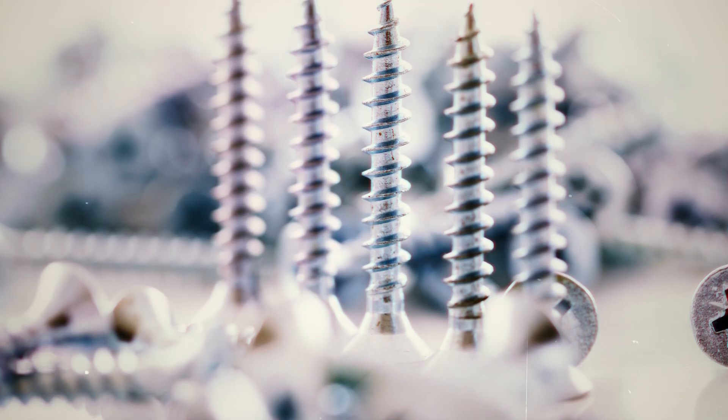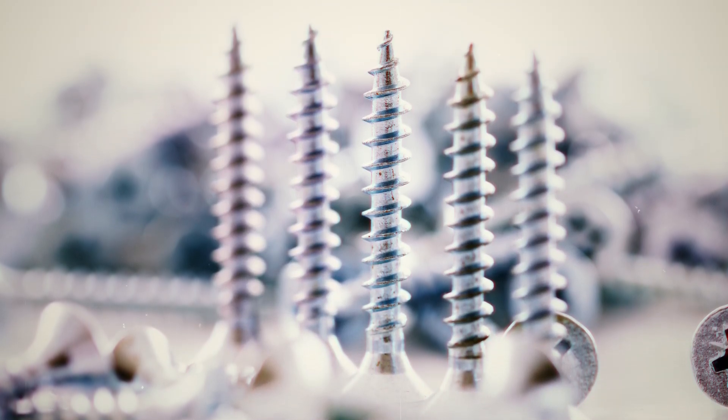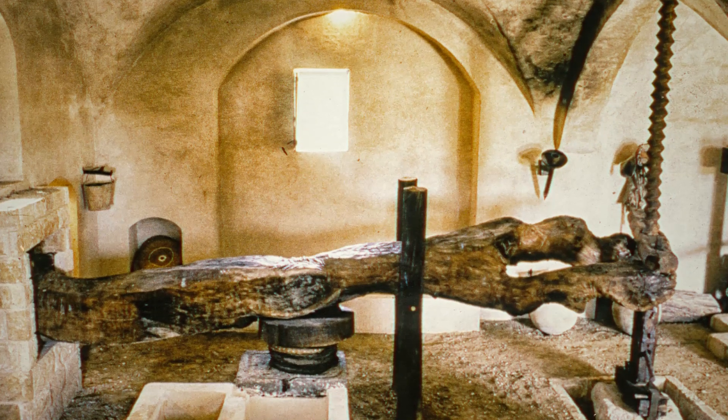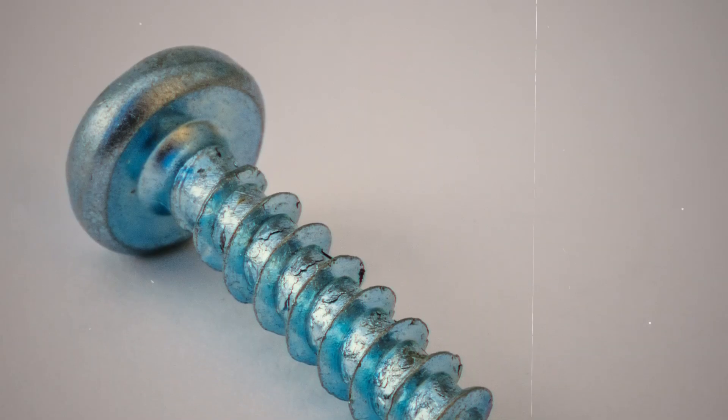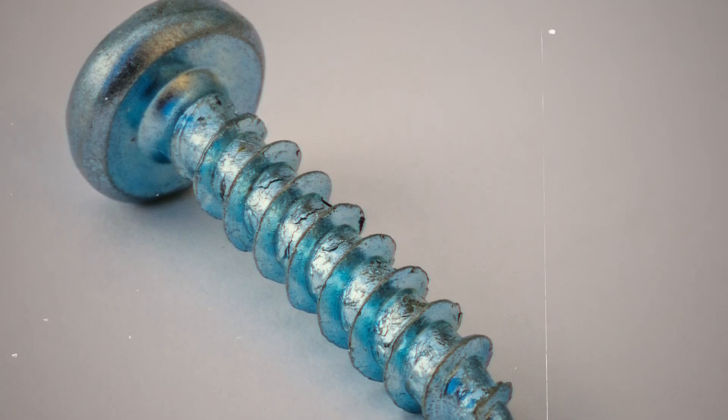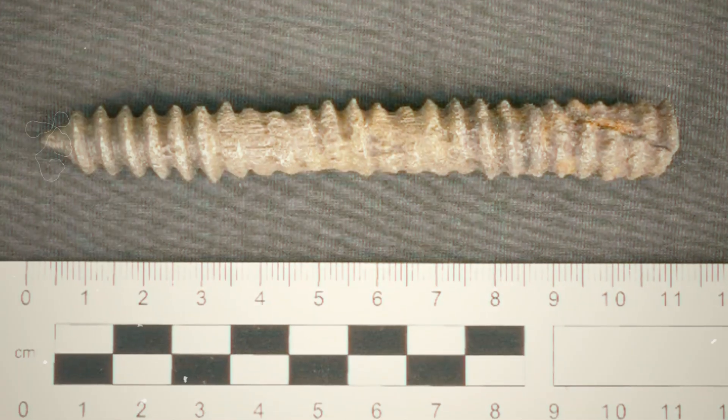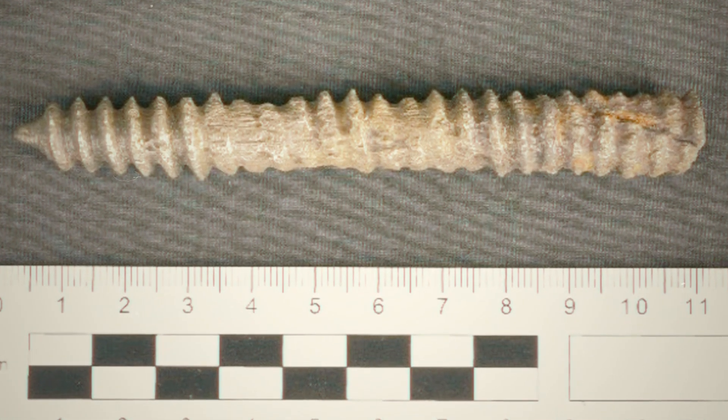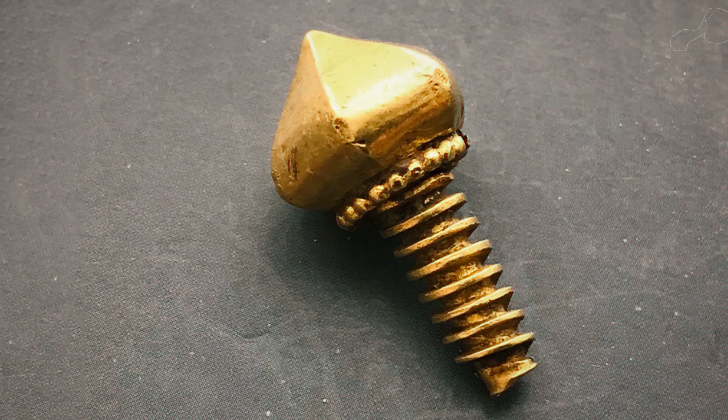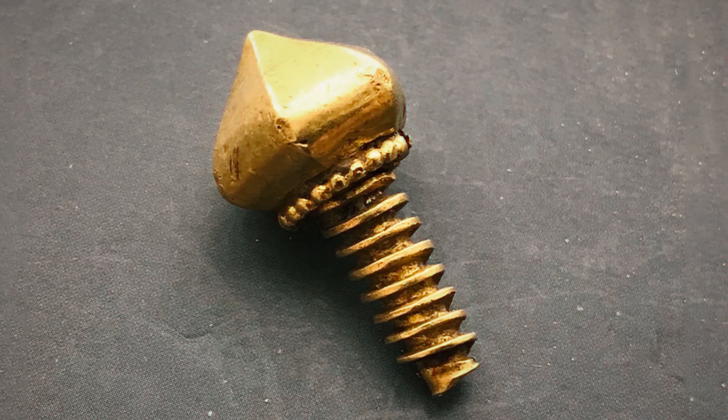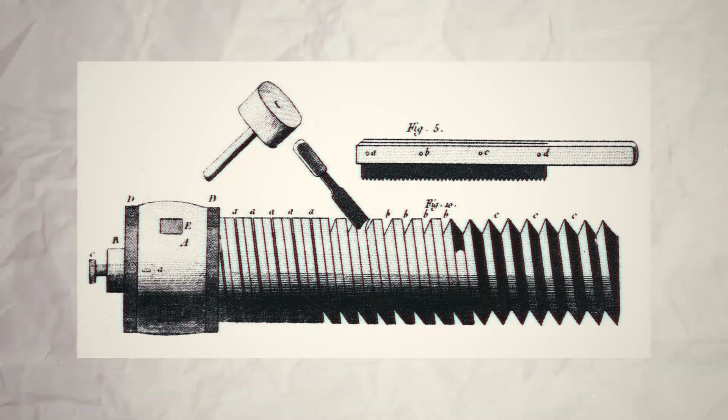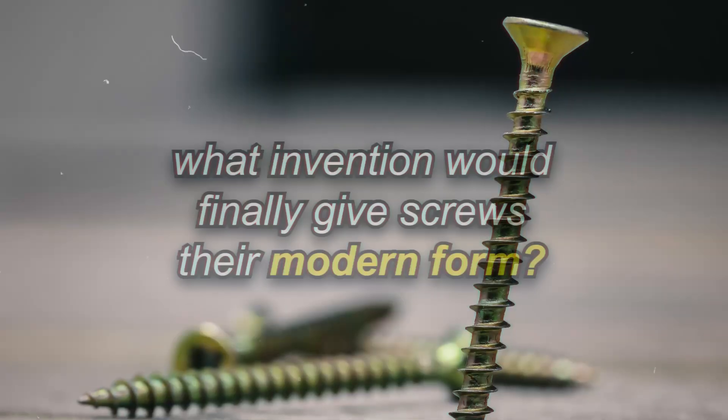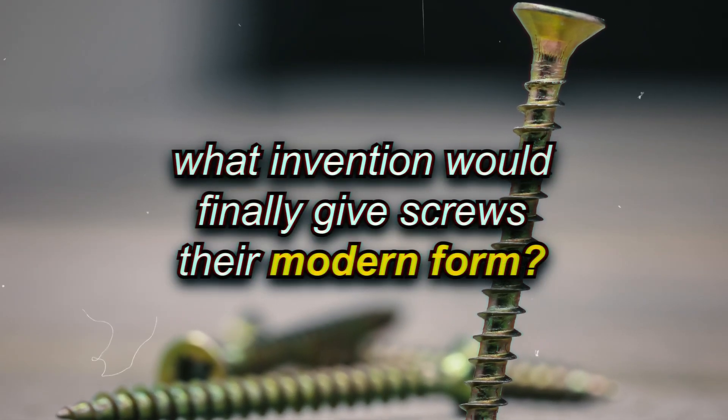These early applications would eventually shape the screws we know today. The use of screws in multiple areas of Roman life, from commerce to military to health, shows just how versatile and indispensable this tool was becoming. But despite these successes, screws were painstakingly crafted by hand, making them rare and expensive. Skilled craftsmen had to carefully carve each thread, making production slow and costly. What invention would finally give screws their modern form?